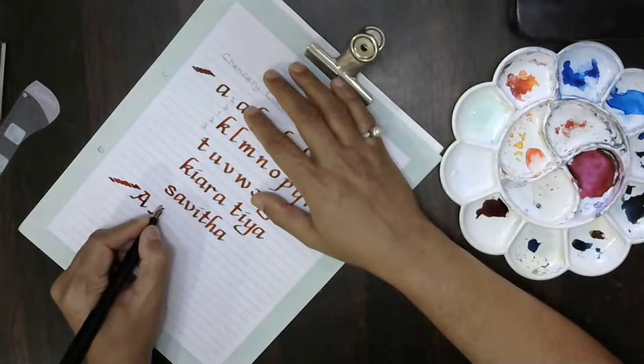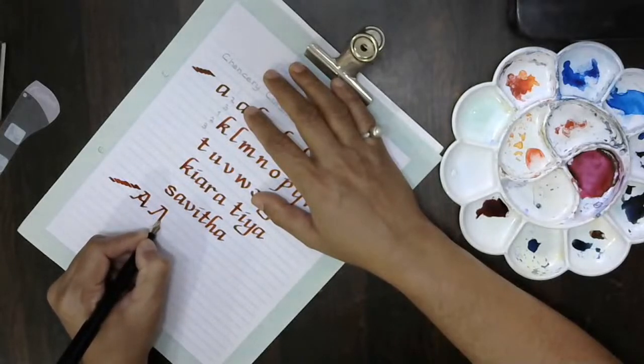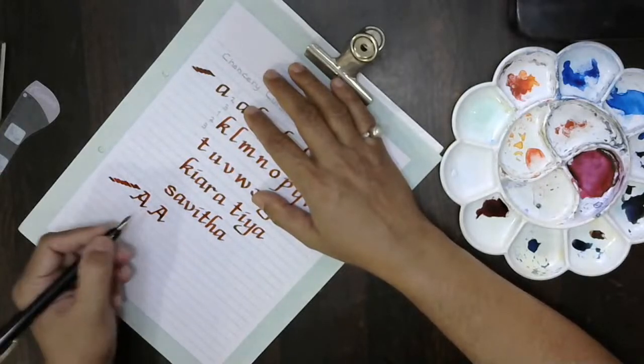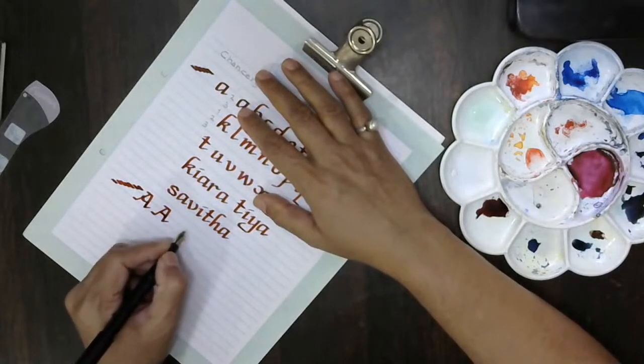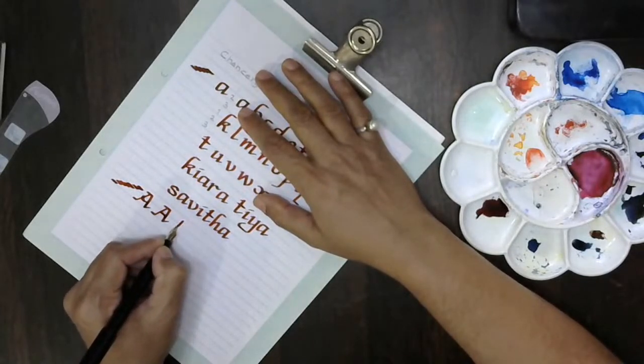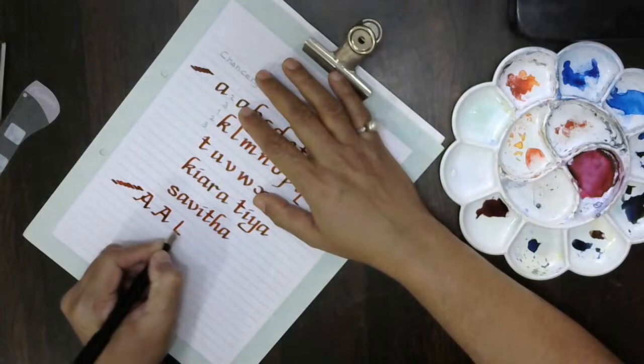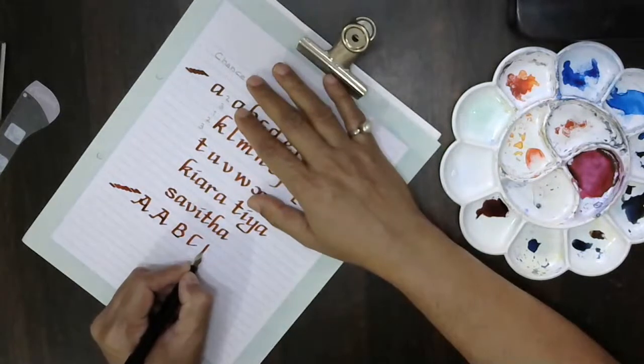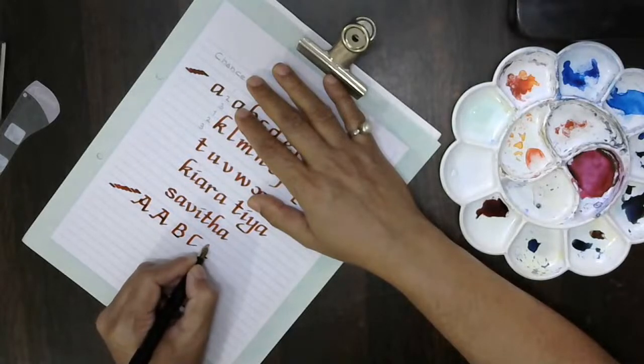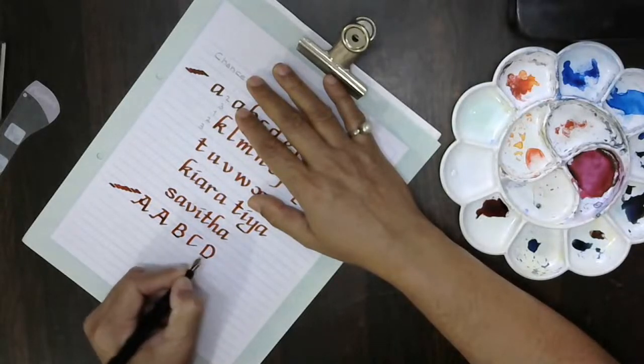Now here we can do A, which can be like this - a straight line or through curve. Both looks good. Then I have to write B. Come down, then this, the curve, come inside, B.